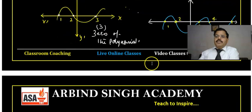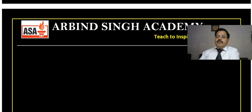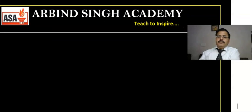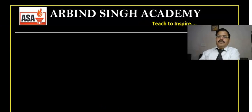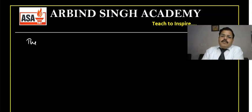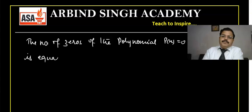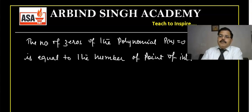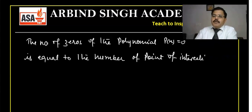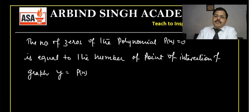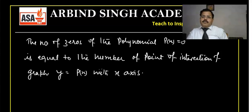So graphically, the number of zeros of the polynomial p(x) is equal to the number of points of intersection of the graph y = p(x) with the x-axis. The number of zeros of polynomial p(x) equals the number of intersection points of the graph with the x-axis.